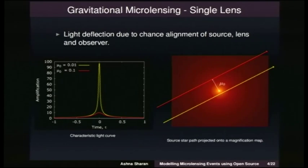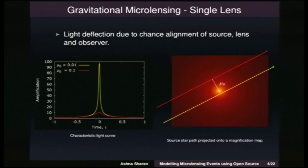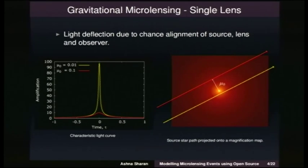This parameter determines what the peak magnification is going to be. The red source track is quite far away relative to the yellow one, so that's a tiny, tiny peak compared to the yellow one over there.